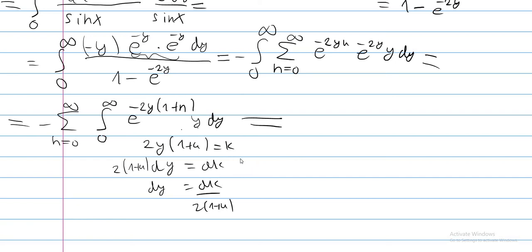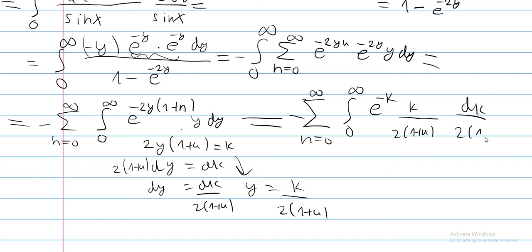We also need this in terms of y, so y equals k over 2 times (1 + n). When y is 0, we get 0; when y is infinity, we get infinity. So we get minus sum going from n equals 0 to infinity of an integral from 0 to infinity, e to the minus k, y is just k over 2 times (1 + n), and this times dk over 2 times (1 + n).